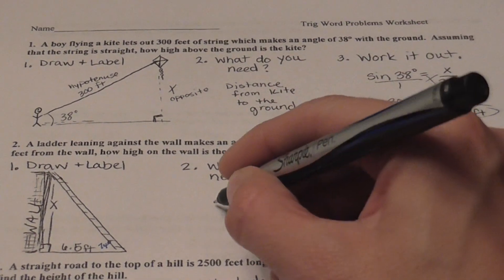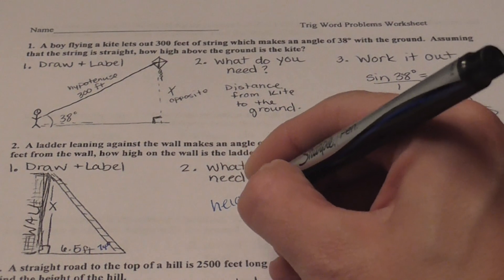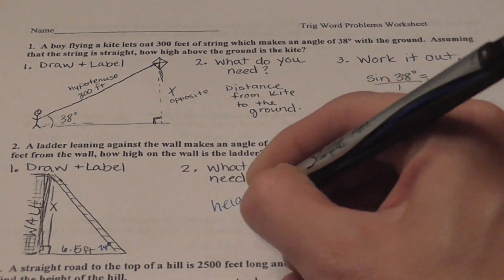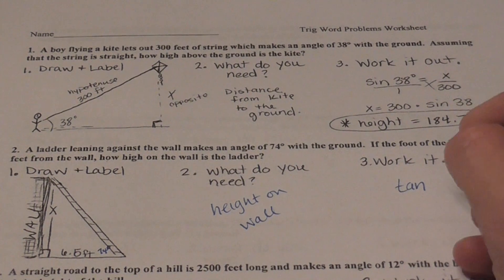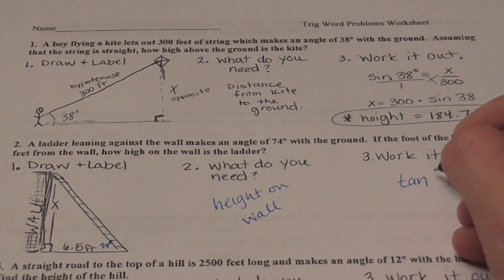All right. So I need the height on the wall. Okay. So tangent is what uses opposite and adjacent.